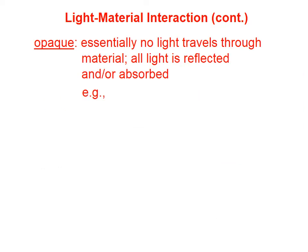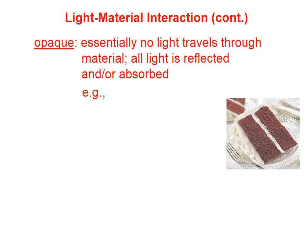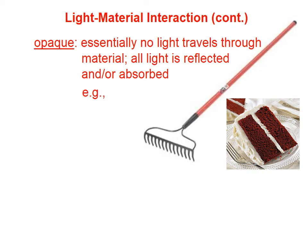An opaque material is one in which essentially no light travels through the material — all light is reflected and/or absorbed. If someone has an opaque personality, that means it's very difficult to tell what they're thinking; it's hidden from us. Opaque materials don't allow light to travel through.